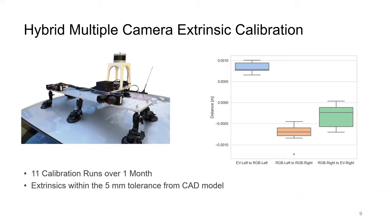The advantage of converting events to frames for calibration is that this enables hybrid multiple camera calibration using standard toolboxes. We demonstrate this by calibrating the extrinsic and intrinsic parameters of an event camera in combination with a standard frame-based camera. Our setup consists of hardware-synchronized two global shutter RGB cameras and two event cameras. To assess the repeatability of our approach, we calibrate a hybrid setup 11 times over the course of one month.